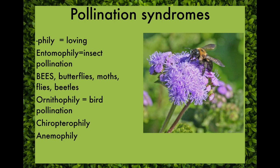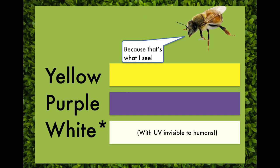Bird pollination is ornithophily. Chiropterophily is bat pollination. There are still a number of flowering plants that rely on wind for their pollination, as is typical in the gymnosperms. So why is it that yellow, purple, and white with UV pigments are the most common flower colors? Because that's what bees see.